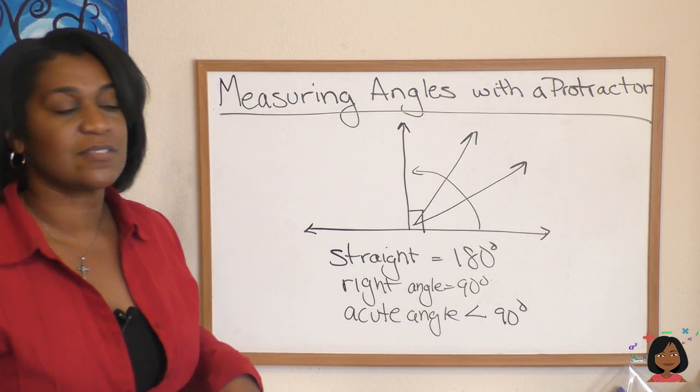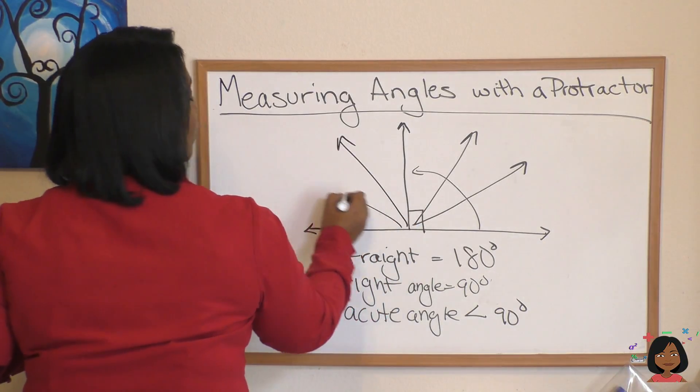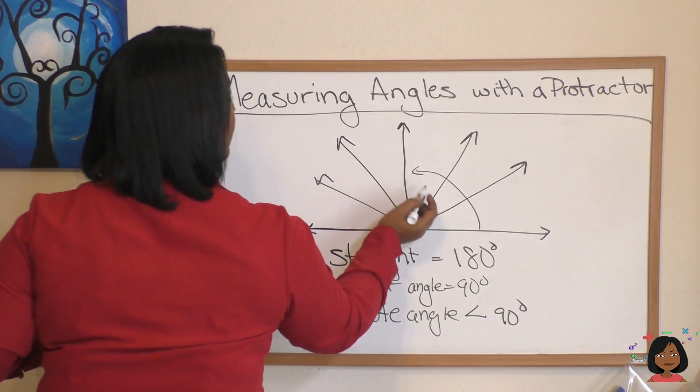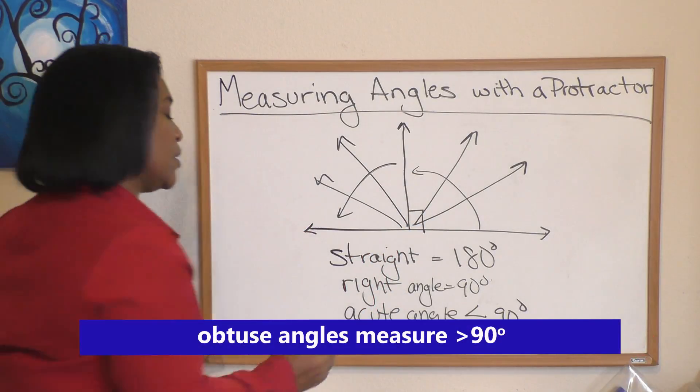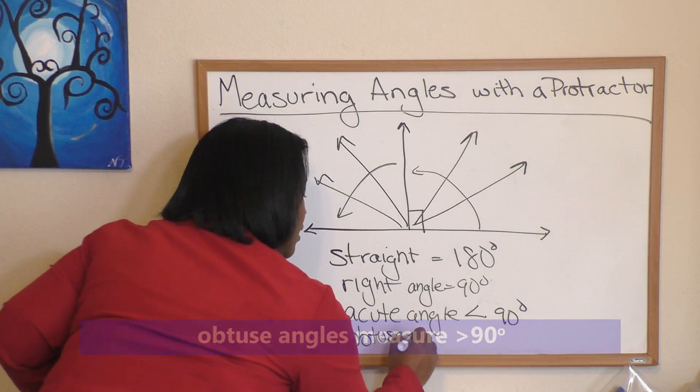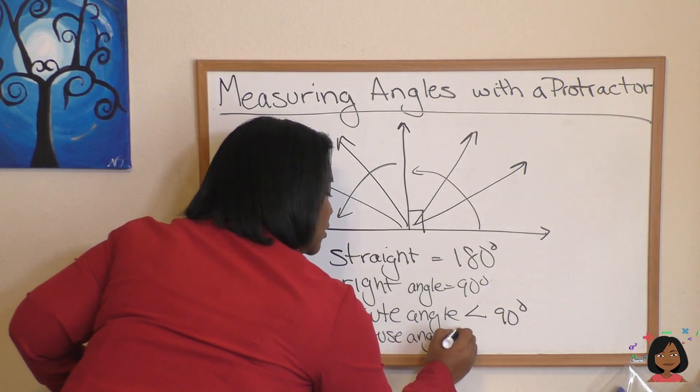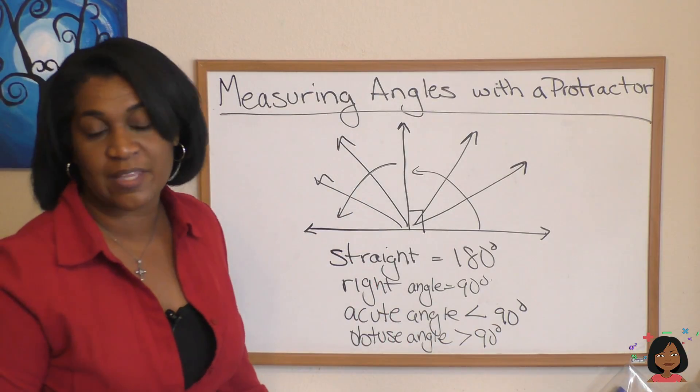Then we have angles that go past 90 degrees. We start here and it goes all the way over here. So from here to here, we call those obtuse angles. I don't know why, but obtuse just sounds big to me. It's greater than 90 degrees. So those are your four kinds of angles.